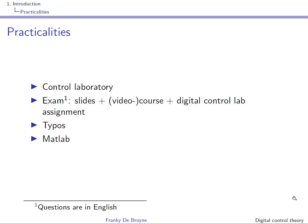The exam covers the classroom course if there is one, the video course, and everything that you've done in the digital control lab assignment. The exam consists of two parts. The first part is a closed-book theoretical exam. The second part is an open-book exam on a PC with MATLAB and Simulink. You can expect applications of the course and the digital control lab in MATLAB and Simulink.